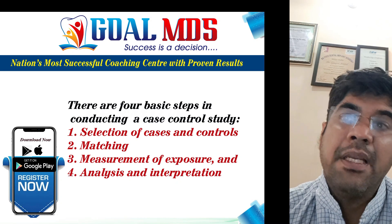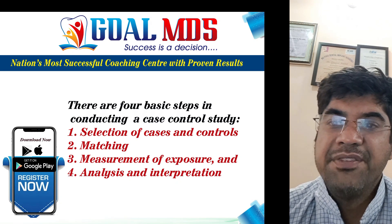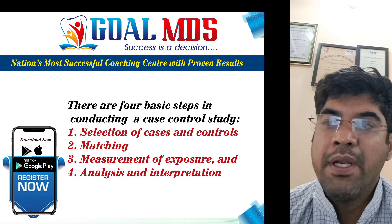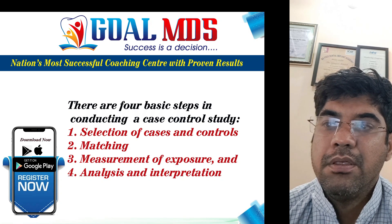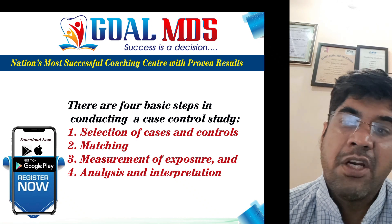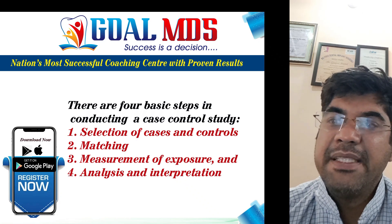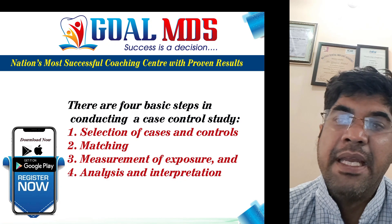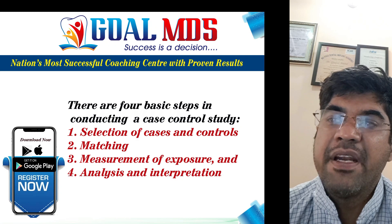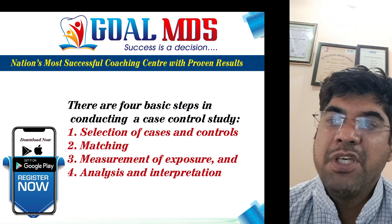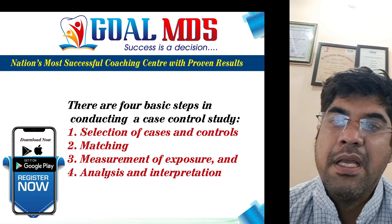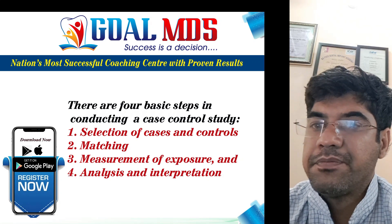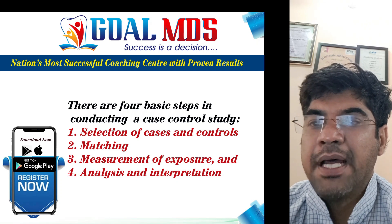The steps in conducting a case-control study include: first, selection of cases (those with the disease) and controls (those without), done in a way that minimizes bias. Second, matching — selecting controls similar to cases in terms of characteristics like age, sex, and race — to reduce potential confounding factors. Third, measurement of exposure — measuring the exposure status of cases and controls, as exposure is usually a risk factor or potential cause of disease. Finally, analyzing the data and interpreting the findings.